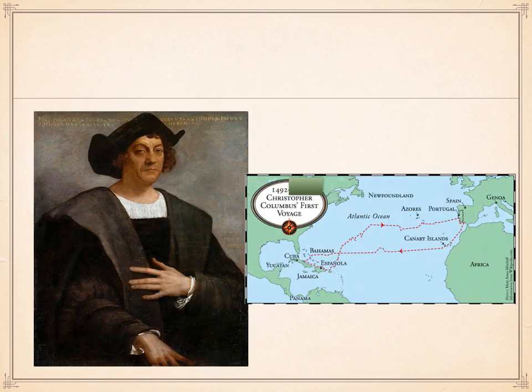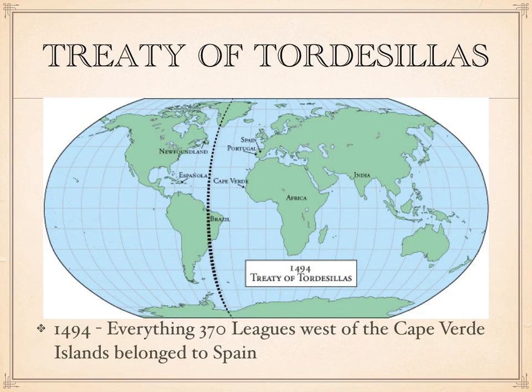After Columbus had sailed to America, Portugal were unhappy because they had had an agreement with Spain from the 1470s that everything below a certain line of latitude belonged to them, and all of Columbus's discoveries were below this line. So to prevent a war, the Pope — Pope Alexander VI — persuaded Spain and Portugal to sign the Treaty of Tordesillas, which stated that everything 370 leagues west of the Cape Verde Islands belonged to Spain — everything beyond the black line you can see on the map.